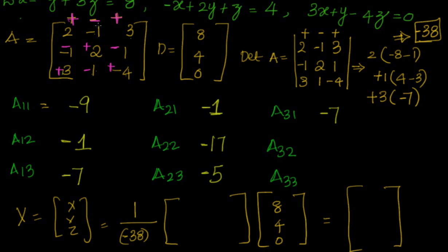A32: removing the element in row 3, column 2, gives 2×1 = 2, plus 3 = 5, but with a negative sign, so A32 = minus 5. A33: removing row 3, column 3 gives 2×2 = 4, minus 1 = 3, so A33 = 3.